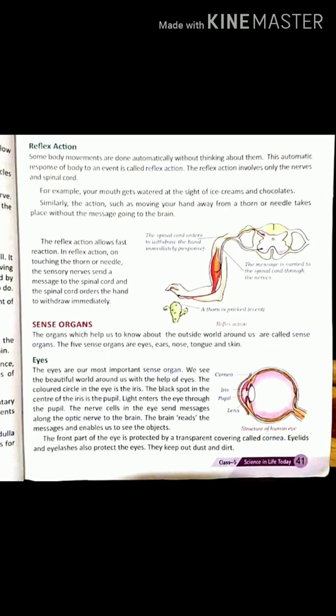In reflex action, on touching a thorn or needle, the sensory nerve sends a message to the spinal cord, and the spinal cord orders the hand to withdraw immediately. The nerves send messages to the spinal cord and the spinal cord orders the hand to withdraw. The same order goes to the muscles to remove the hand immediately.